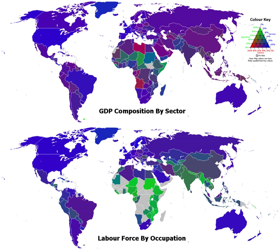Manufacturing industry became a key sector of production and labor in European and North American countries during the Industrial Revolution, upsetting previous mercantile and feudal economies. This came through many successive rapid advances in technology, such as the production of steel and coal. Following the Industrial Revolution, possibly a third of the economic output comes from manufacturing industries.